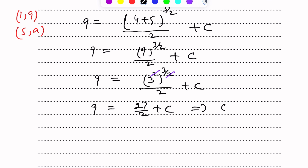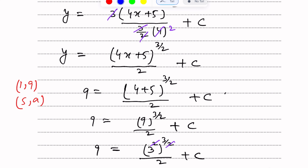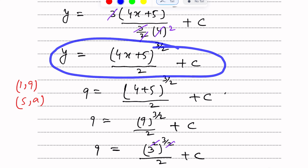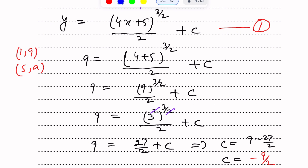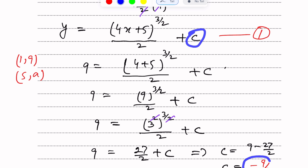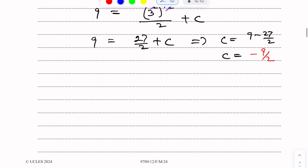So 9 = 27/2 + c. From here, c = 9 − 27/2. By taking LCM, c = (18 − 27)/2 = −9/2. اب c کی value −9/2 ہمارے پاس آگئی۔ اسے equation of curve میں put کریں گے — let this be equation number one۔